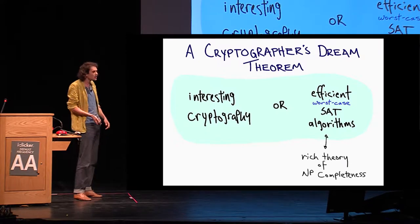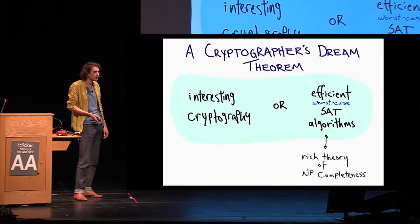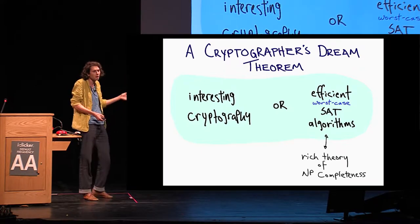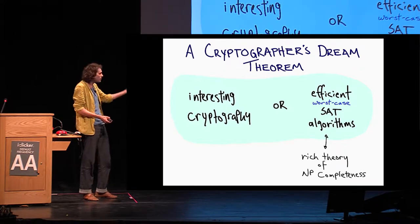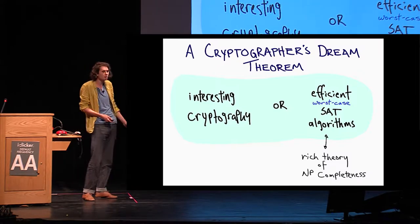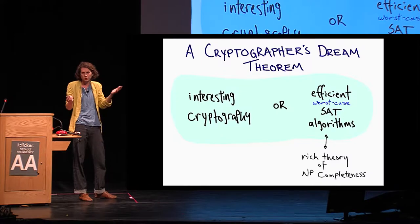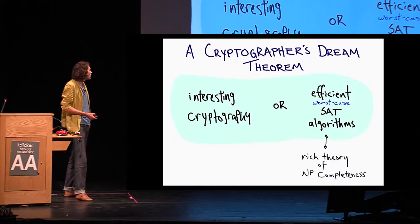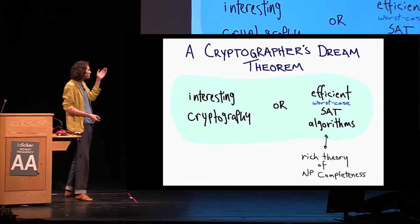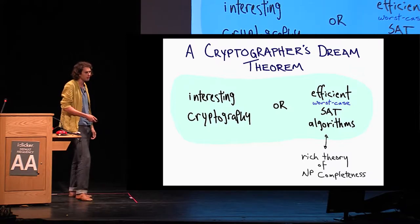It's probably pretty obvious. We have this amazing, rich theory of NP completeness so that if you break the cryptographic scheme, then you have far-reaching consequences. But unfortunately, we know there are explicit barriers to proving statements like this. We know barriers to even proving average case hardness from NP hardness.